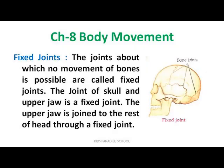Fixed joints are those about which no movement of bones is possible. The joint of the skull and upper jaw are fixed joints. You can move your lower jaw, but the upper jaw cannot move. The skull's joints cannot be moved — they are fixed joints. The upper jaw is joined to the rest of the head through a fixed joint.